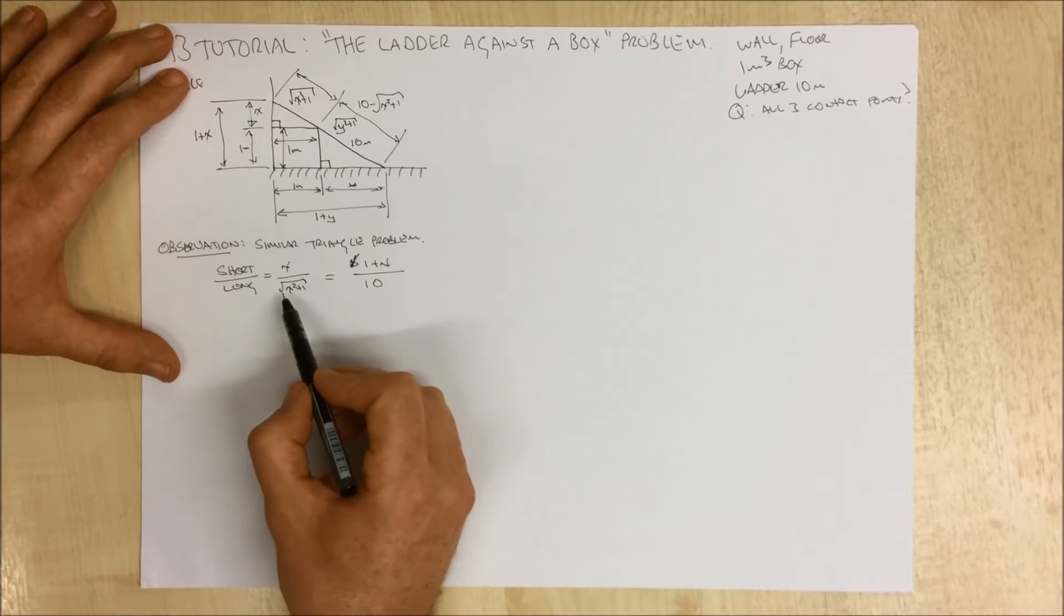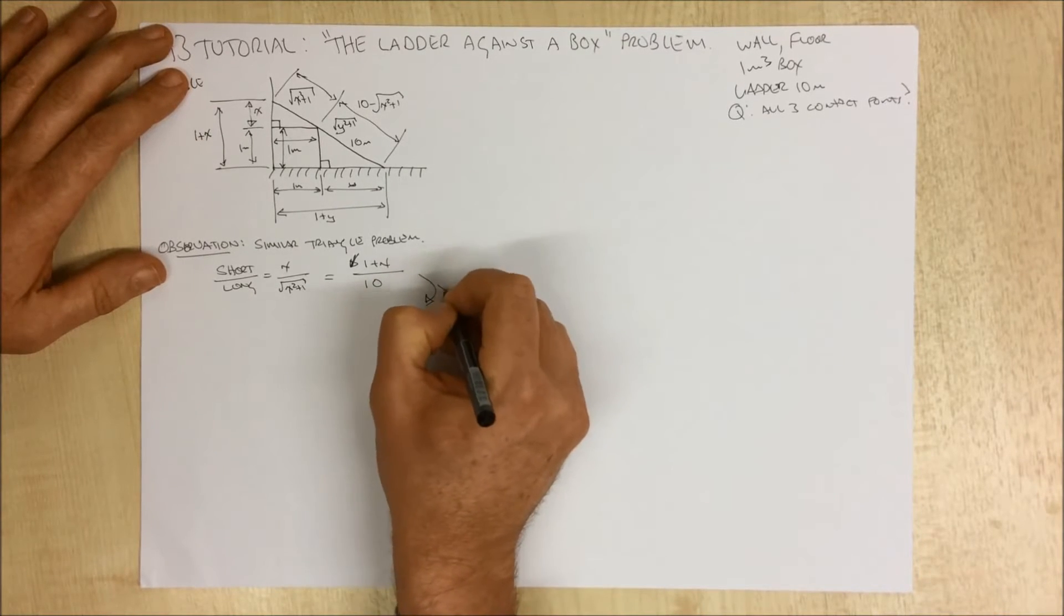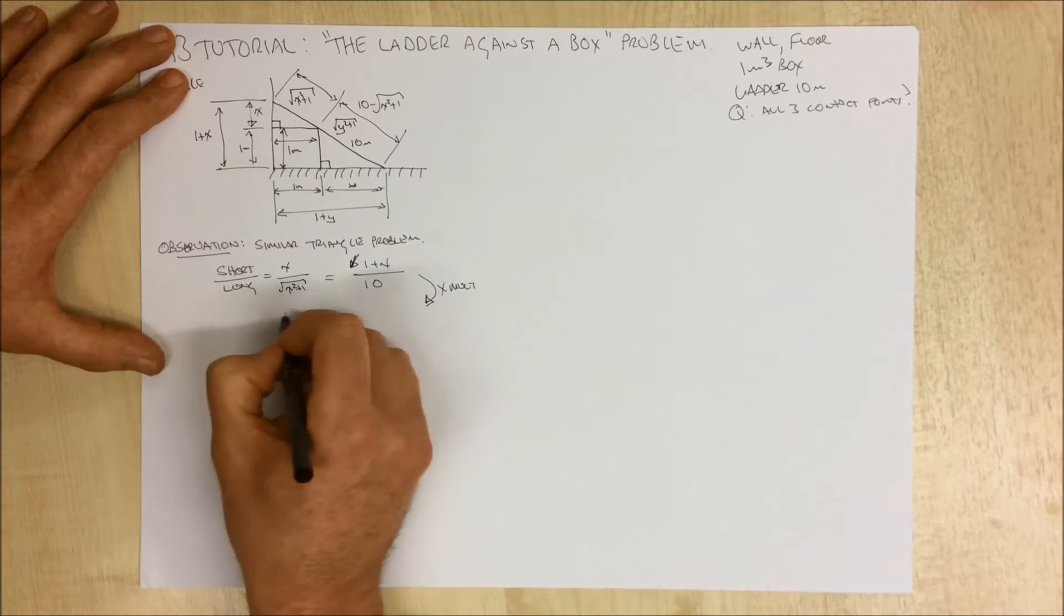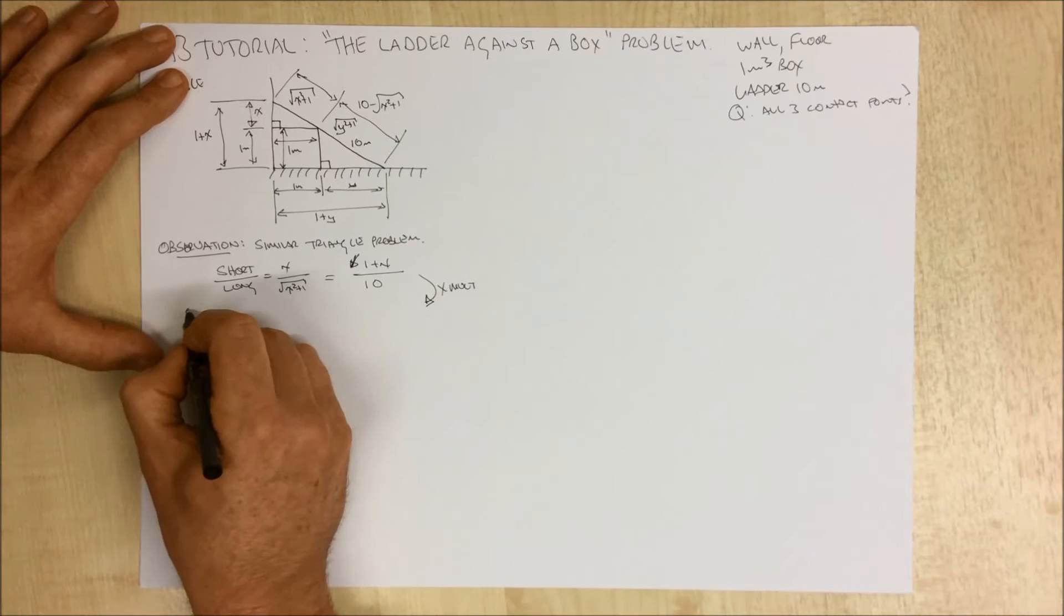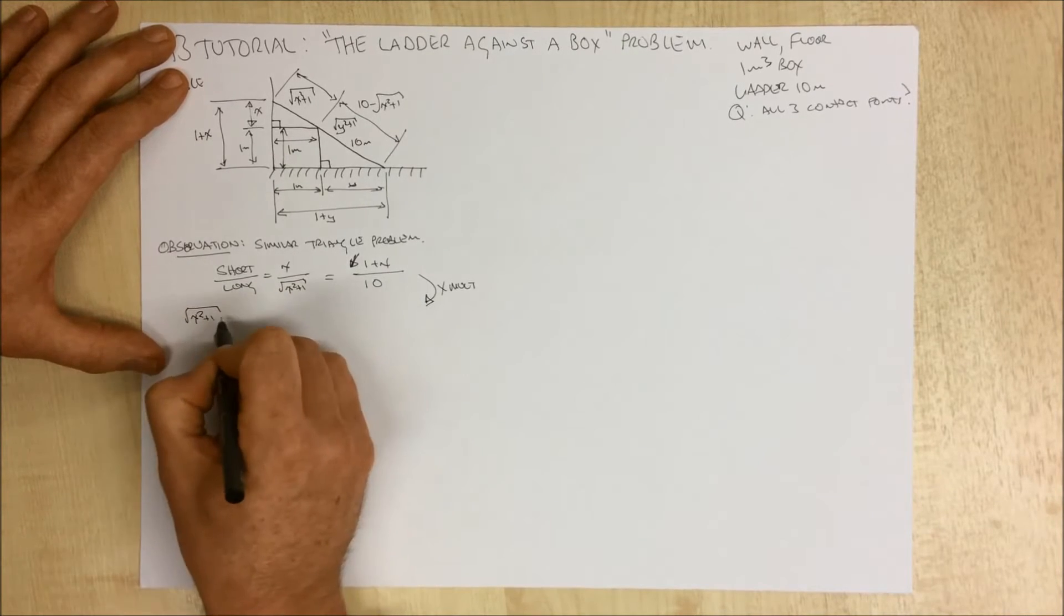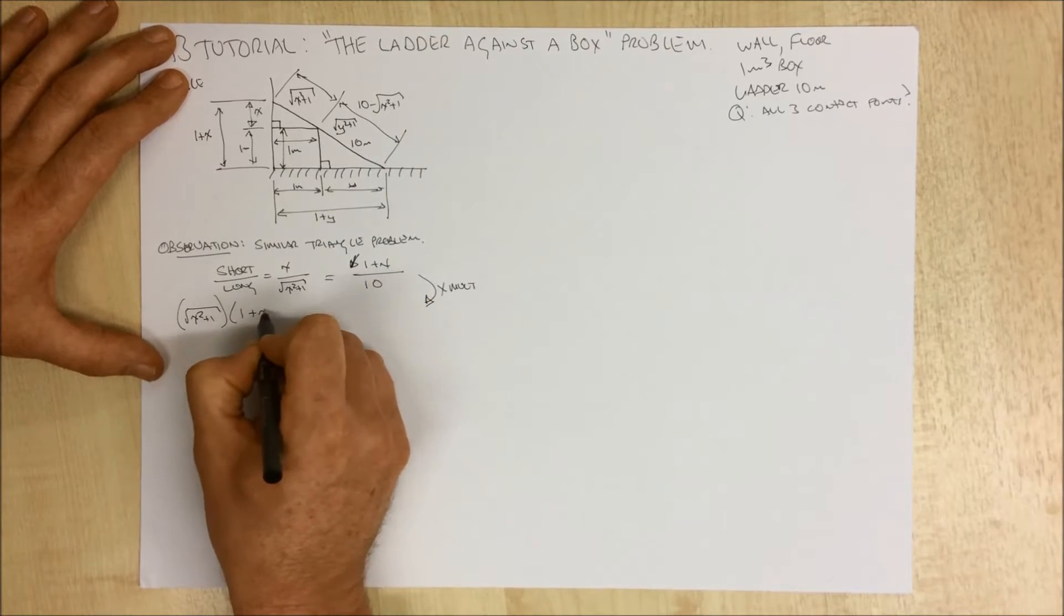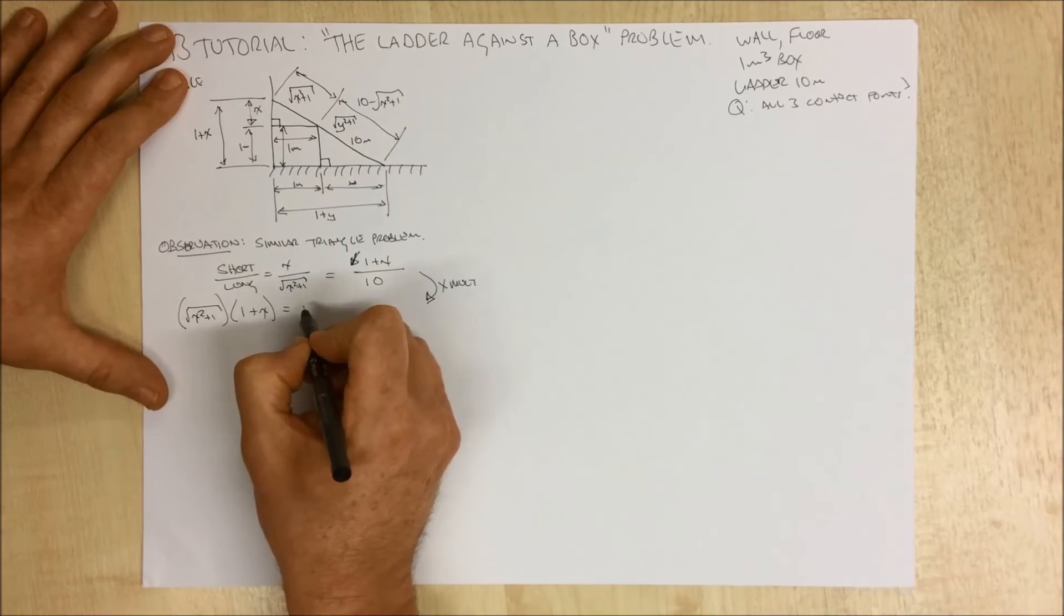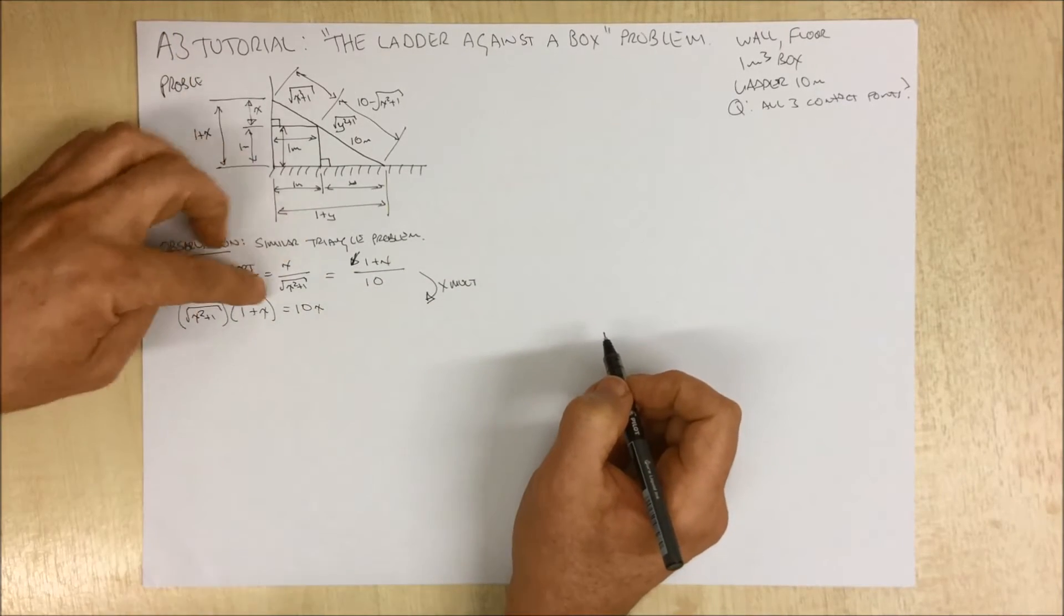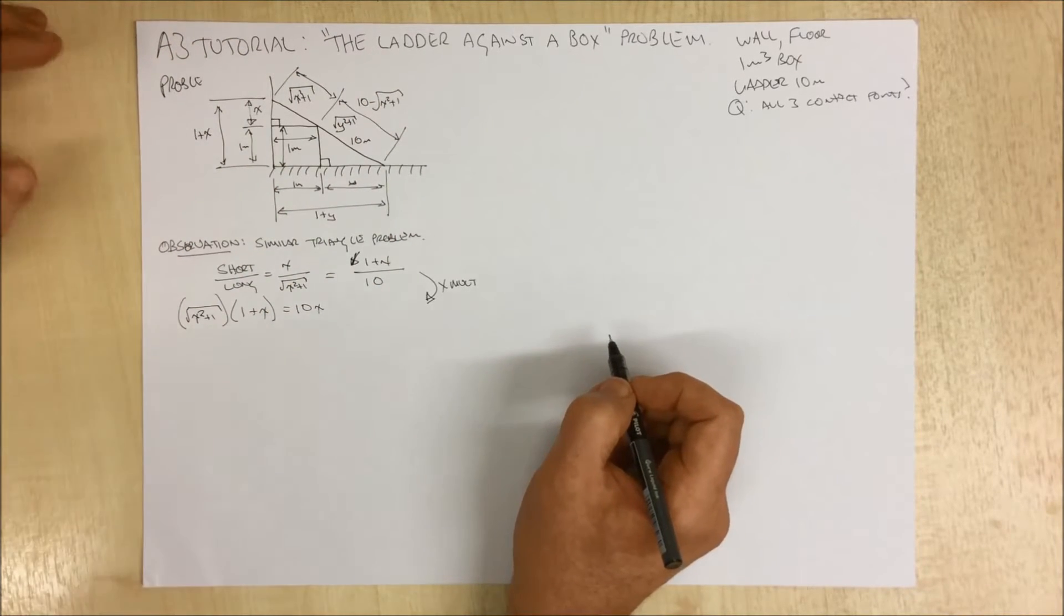So what we can do here is cross-multiply this. And that will give us the square root of x squared plus 1 times 1 plus x equals 10x. So we've got that expression here. We simply cross-multiply to yield this.